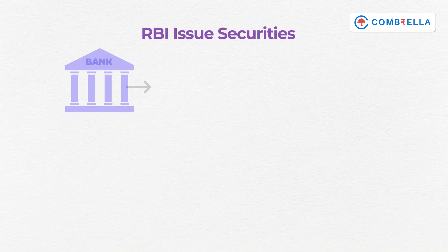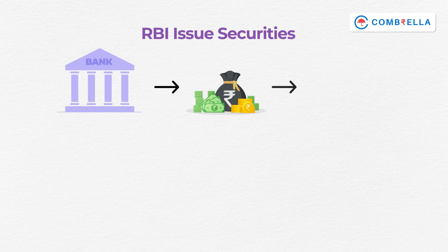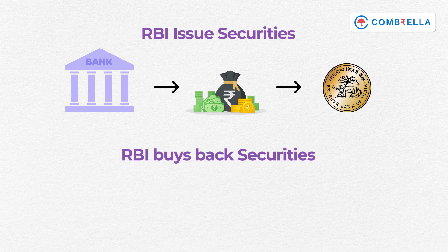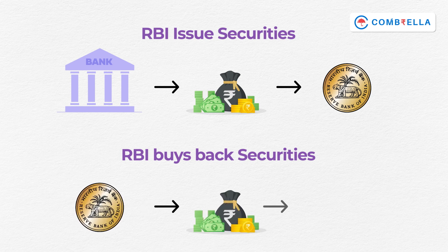The next point is Open Market Operations. RBI also issues government securities, bonds, and treasury bills to banks, NBFCs, and big financial institutions like LIC, UTI, etc. So when RBI issues securities, banks will buy them, and the money will flow from banks to the RBI, thereby reducing the money supply in the economy. And these securities issued by RBI can also be bought back by RBI from the banks and NBFCs. And that time, money will flow from RBI to the banks.